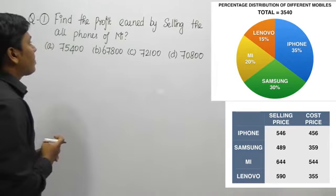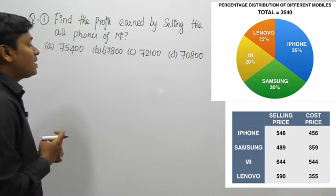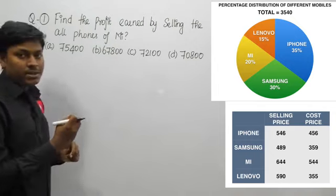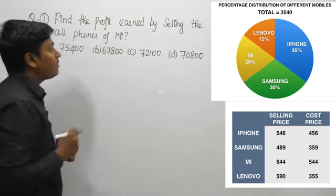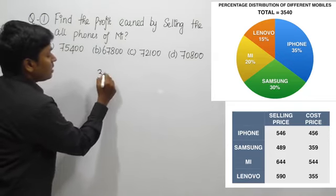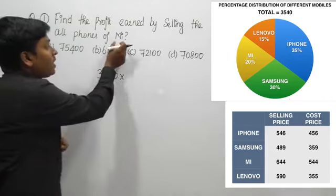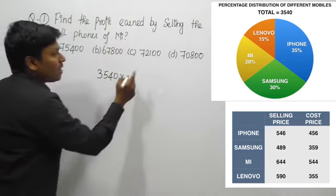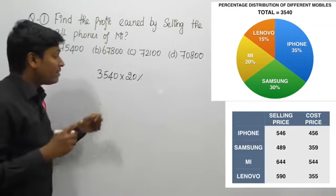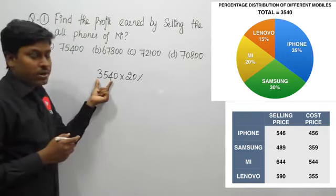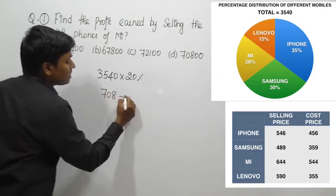Question number one: find the profit earned by selling all phones of Mi. Our target is to find the profit earned by selling all Mi mobile phones. Out of 3540 total mobiles, Mi is 20 percentage. So 10 percentage will be 354, and 20 percentage will be 708. So there are 708 Mi mobiles.